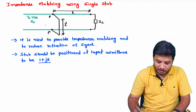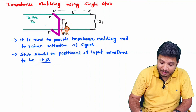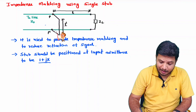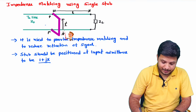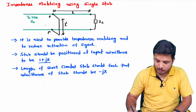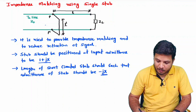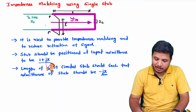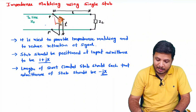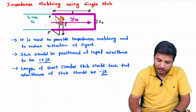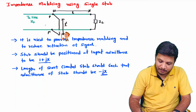The next question is: what should be the length of this short-circuited stub? The length of the short-circuited stub should be chosen such that the admittance of the short-circuited stub is minus jx. So if the normalized input admittance at PP' is 1 + jx and the stub admittance is minus jx.